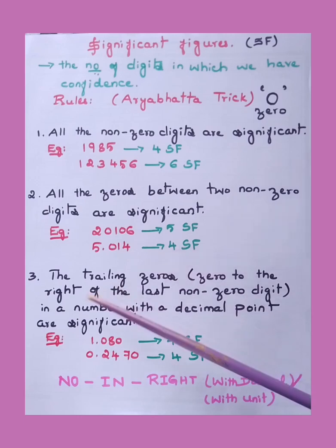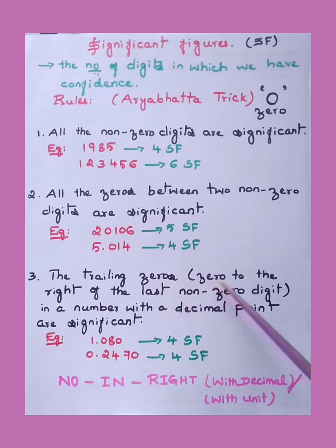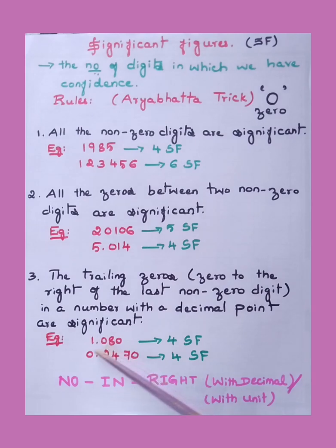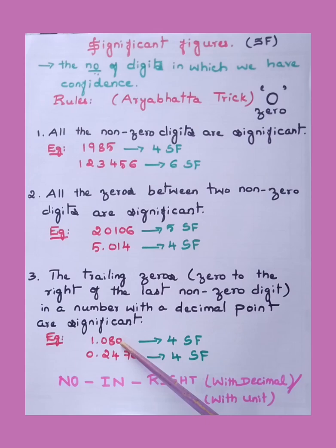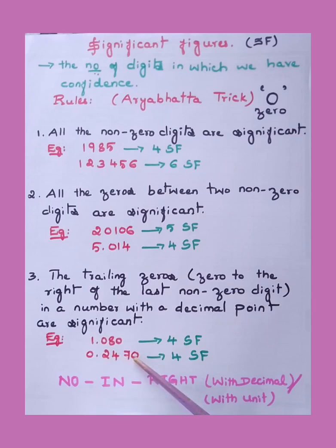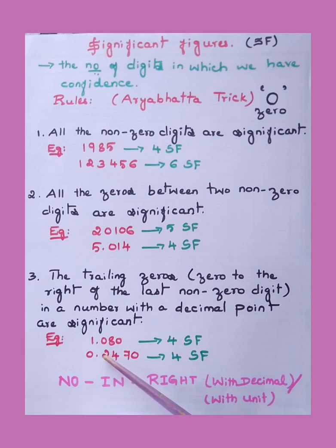Third rule: the trailing zeros on the right side — zero to the right of the last non-zero digit — the trailing zeros in a number with a decimal point are significant. For example, 1.080 — the non-zero number is 8, and after it there is a 0. In decimal places, even on the right side, that zero is significant. So 1.080 has four significant figures. If it is 0.2470, start from the first non-zero number: 2, 4, 7, 0 — that is four significant figures. The left side zeros we do not count.